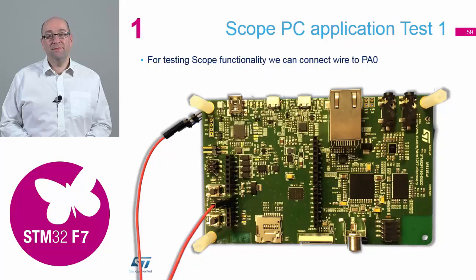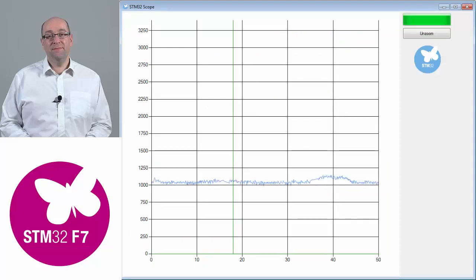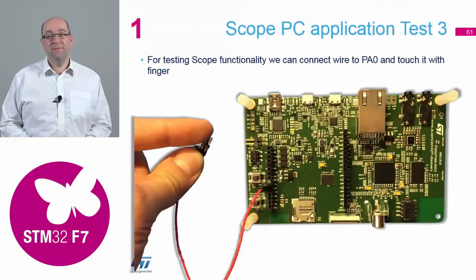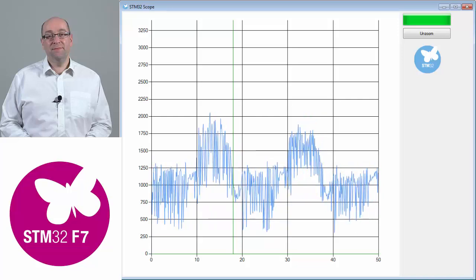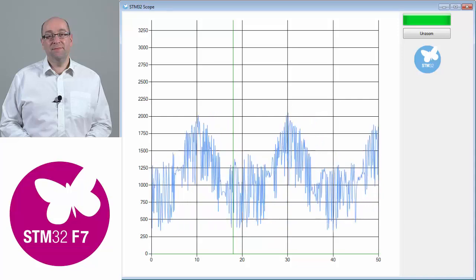Once we connect an item to this pin, the noise level on the screen will change slightly. And as soon as we touch the end of our connected wire to provide additional noise onto the analogue inputs that we are measuring, a significant change should be visible in our scope trace as shown on the screen.